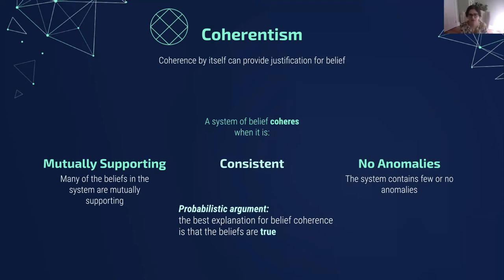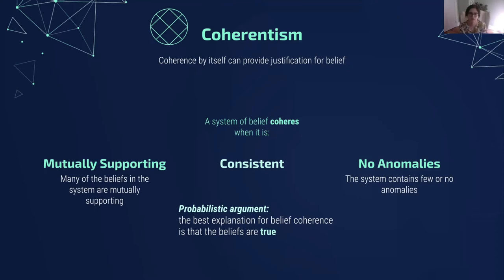How do I know that a system of beliefs coheres? Well, it coheres when it's, first of all, consistent — the beliefs don't contradict each other. Second, when the beliefs are mutually supporting — many of the beliefs in the system are mutually supporting, so one suggests the other, entails the other. And finally, when there are no anomalies in that system of belief. There aren't any weird, left-out, oddball beliefs that don't fit well with the other beliefs. So you'll have a nice network when beliefs are consistent, mutually supporting, and there aren't any anomalies.